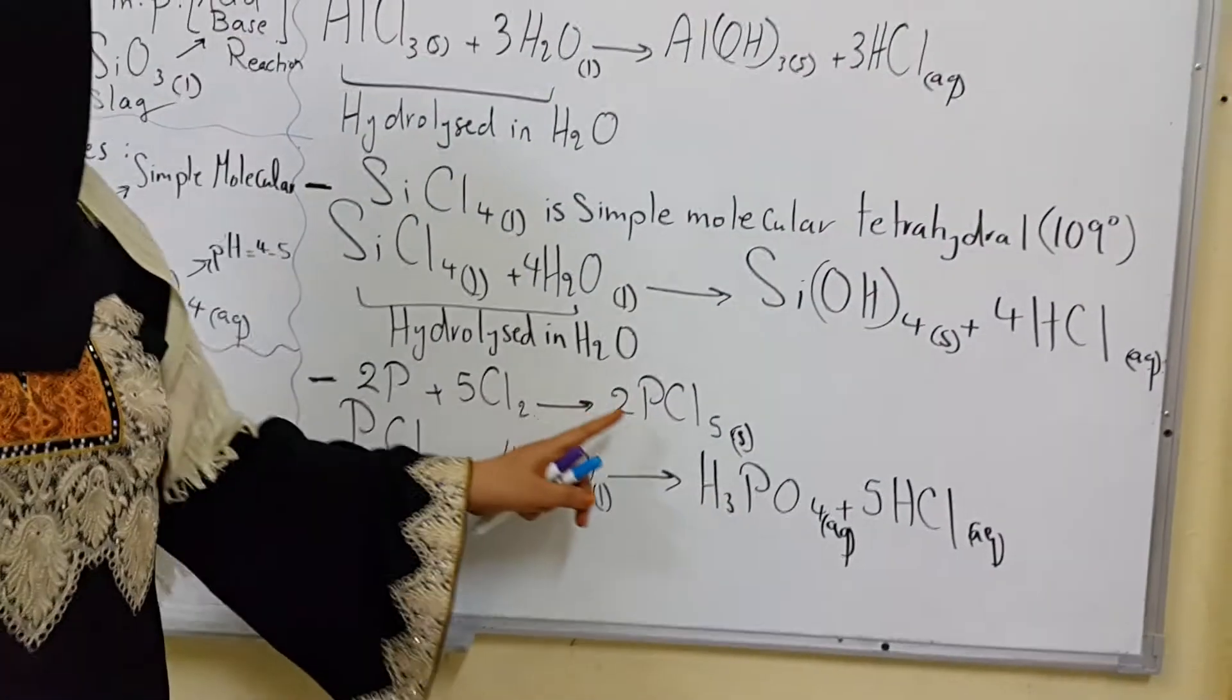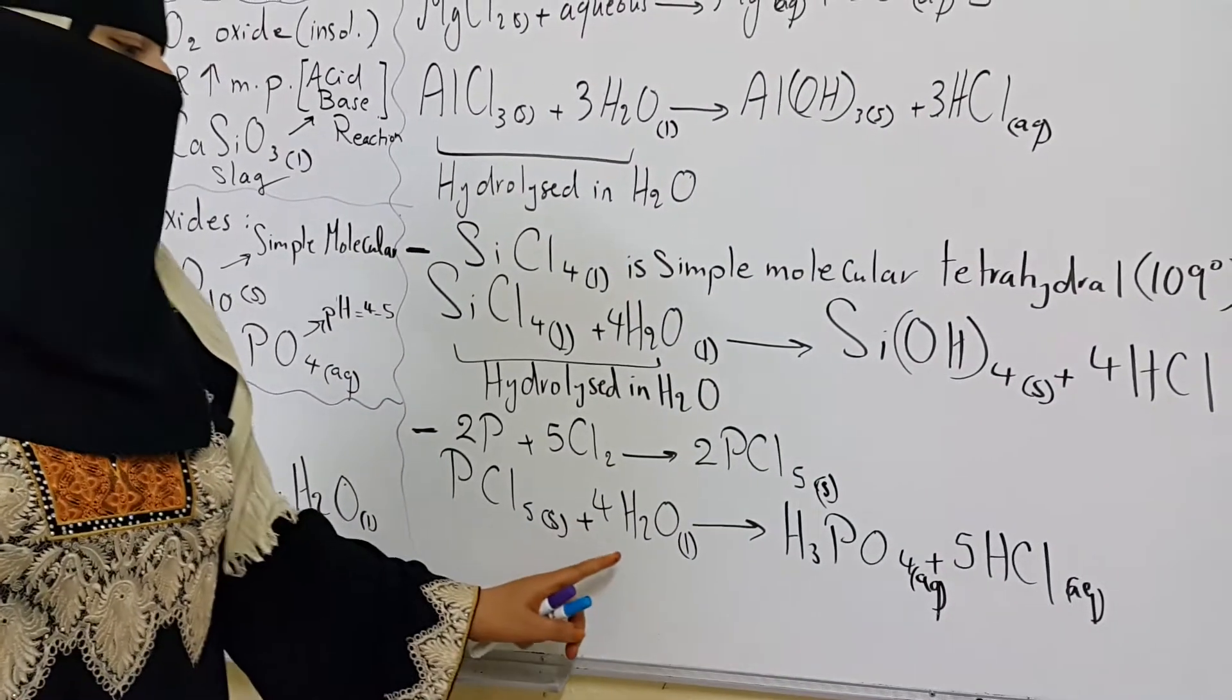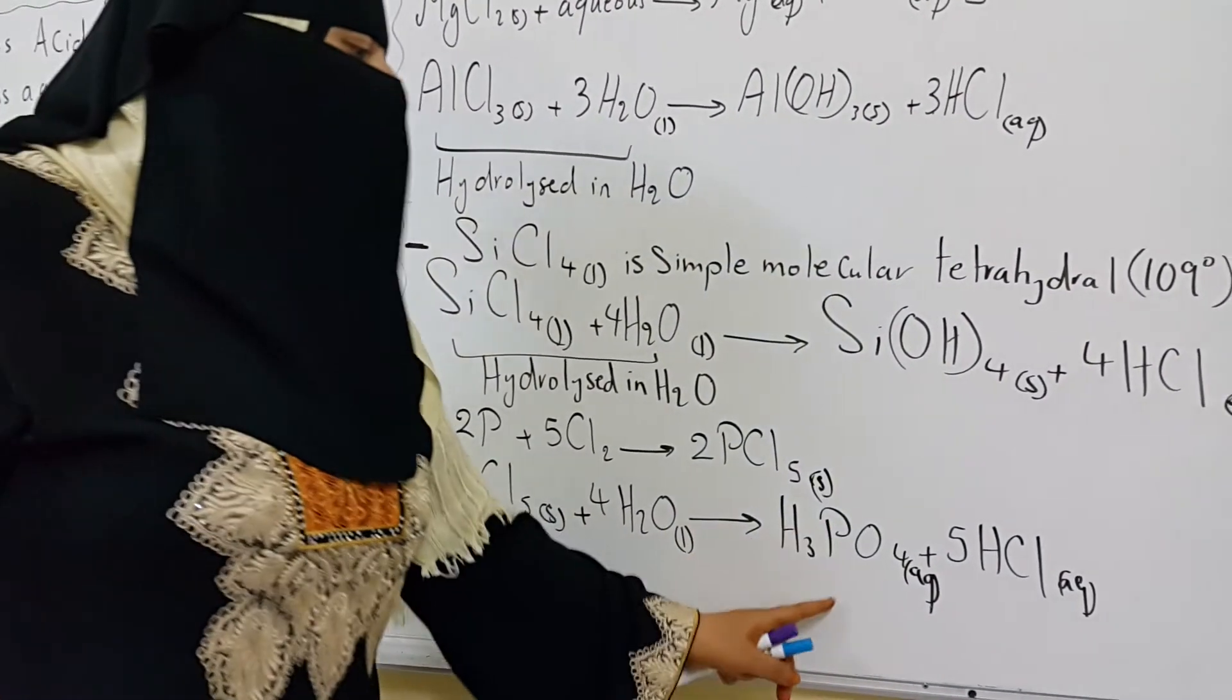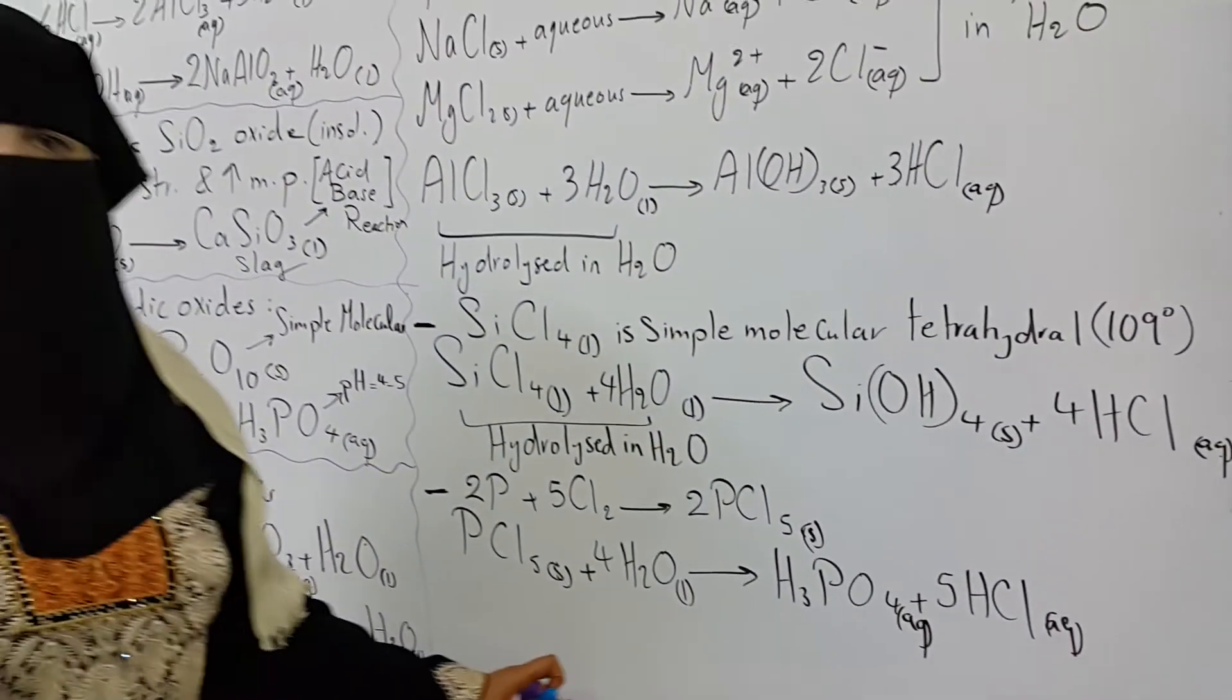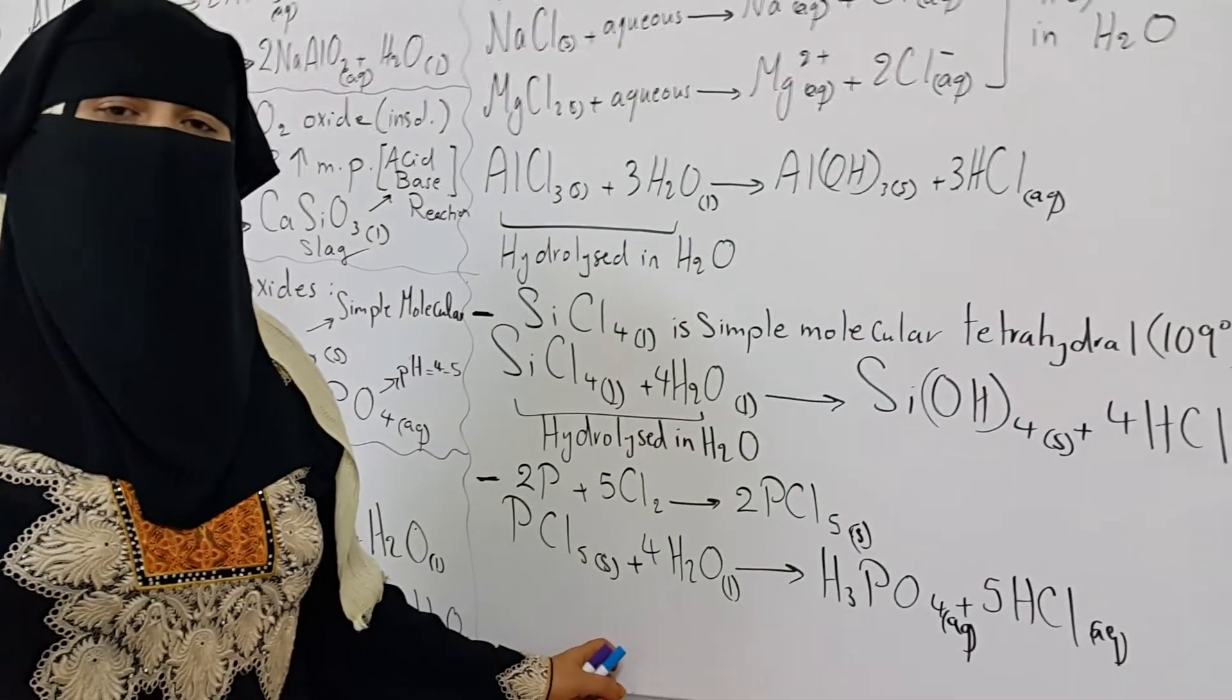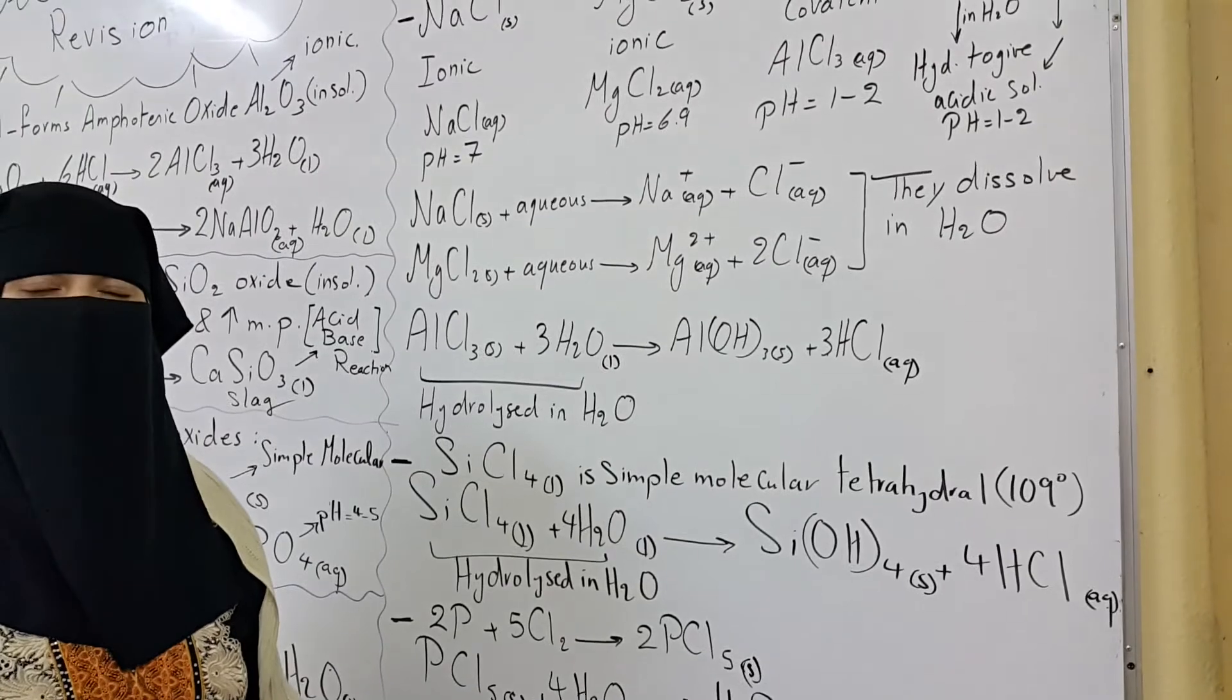Phosphorus with chlorine forms phosphorous pentachloride, and phosphorous pentachloride hydrolyzed in water to give two acids, phosphoric and HCl, and the pH here is also strongly acidic 1 to 2. These chemical equations are very important. Take my advice and practice them before you go to your exam tomorrow, inshallah.